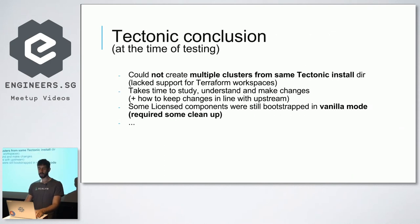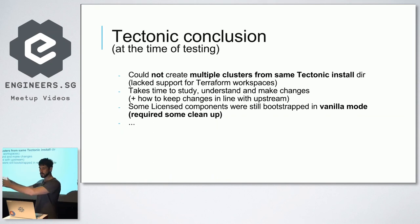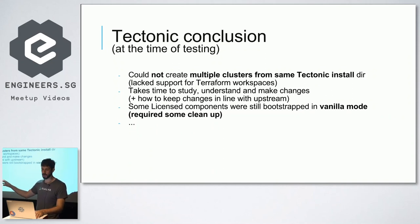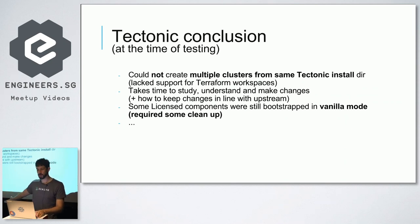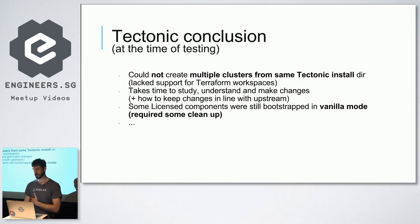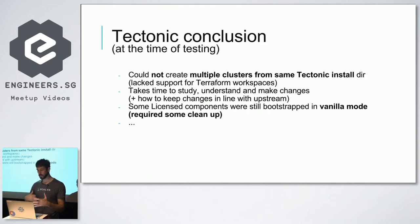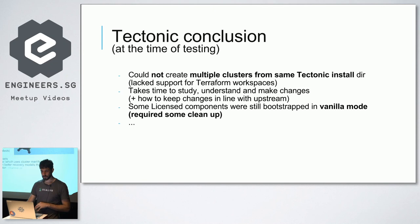One big problem with Tectonic was that at the time we used it, you had to create a separate Tectonic installation for each cluster. I wanted to use Terraform workspaces — a way to isolate state so you keep the same Terraform configuration but point it at different state files, creating similar clusters for different environments like production and staging. That was something I felt was lacking in Tectonic, so we decided to go with KOPS.